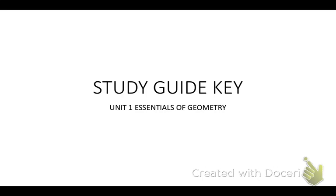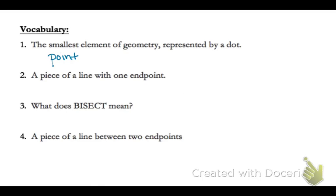So the unit one study guide. This first chunk is just a lot of definitions, so I'm going to just read you the answers. For one, we have a point. For two, is a ray. Bisect means to cut into two congruent parts.